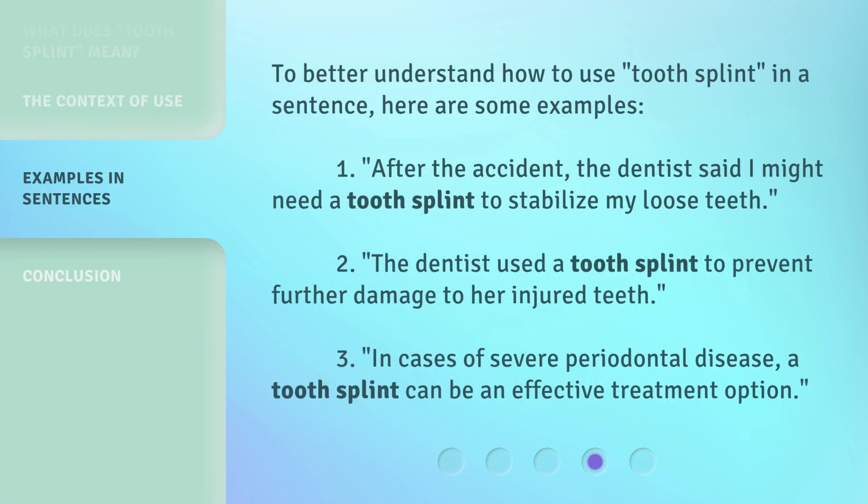To better understand how to use tooth splint in a sentence, here are some examples. 1. After the accident, the dentist said I might need a tooth splint to stabilize my loose teeth. 2. The dentist used a tooth splint to prevent further damage to her injured teeth.